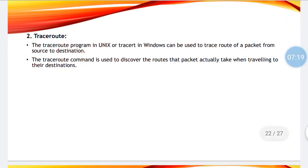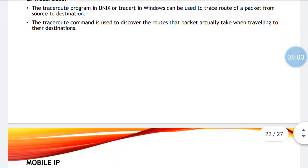Next is the traceroute program. It is available in Unix as well as Windows, and it can be used to trace the route of a packet from source to destination. The traceroute command is used to discover the routes that a packet actually takes when travelling to the destination. For example, type 'traceroute google.com' in the command prompt — the packet won't go directly to google.com's server but instead will take hops, probably 3 to 4 hops. It will also show the IP addresses of the various hops used to reach google.com.